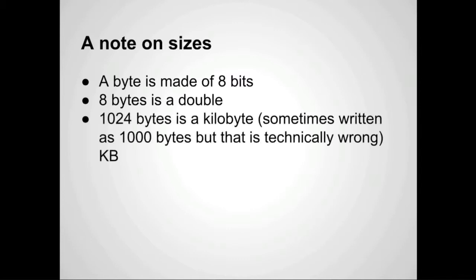1,024 bytes is a kilobyte. It's sometimes written as 1,000 bytes, but that's not quite right because it's typically measured in binary. As the sizes go up, the distinction gets less and less significant. A kilobyte is abbreviated as capital KB — that's different from kilobits, which is capital K lowercase b. We'll talk about that more when we discuss internet speeds.